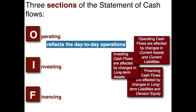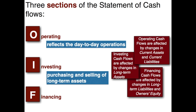The second section is the investing activity section, and in this section you're going to analyze the long-term assets — the changes in the long-term assets. So what have you purchased? What have you sold? And the third section is the financing activity section. This has to do with borrowing — any accounts that have to do with the company borrowing money. That would be your long-term liabilities and your owner's equity accounts.